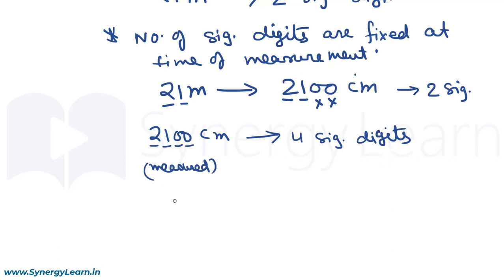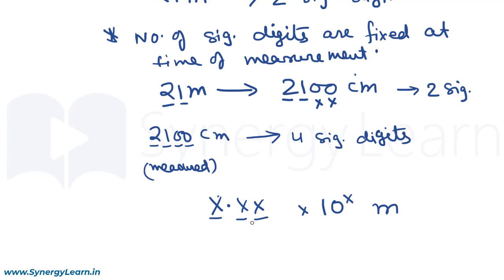To resolve such situations, the SI system says to report numbers in scientific notation, where the decimal is placed after the first nonzero digit and all other significant digits are carried together with a power of 10. Here the number of significant digits are the digits present in the coefficient, which in this case is 3. And hence we have clarity on significant digits.